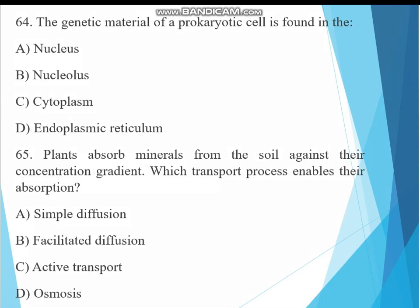Question 64. The genetic material of prokaryotic cells is found in: A. Nucleus, B. Cytoplasm, C. Endoplasmic reticulum. The answer must be cytoplasm. Prokaryotic DNA floats freely in the cytoplasm, there is no nucleus.